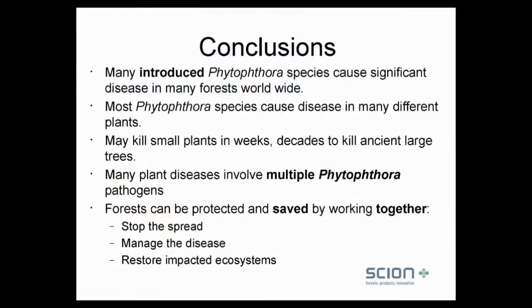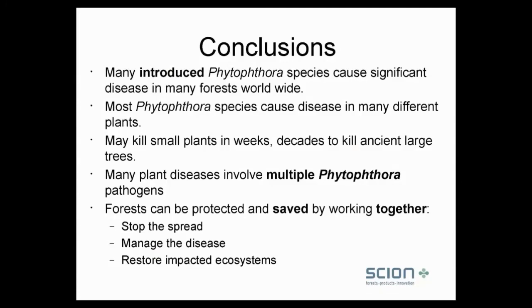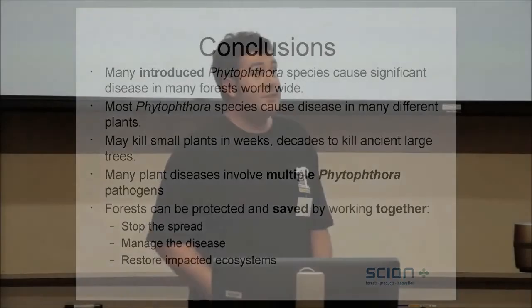To conclude: there are many introduced phytophthora species causing significant diseases all over the world — New Zealand is not alone, and we need to tap into those international resources. Many phytophthora species cause disease in many different plant species — it may be a danger to assume it's just kauri that are affected. They may kill plants in weeks, but if a tree is infected and doesn't die in five years, it doesn't mean it won't die in ten. Many diseases involve many phytophthora species, and we know we've got some really nasty ones in New Zealand. Forests can be protected if we work together — we need to stop the spread, manage disease, and restore impacted ecosystems.